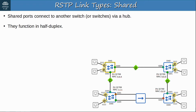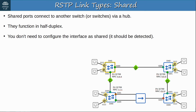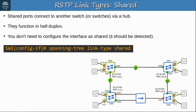Finally, shared ports connect to a hub. Due to the nature of hubs and the likelihood of collisions, these links must function in half-duplex. You don't need to configure the interface in shared mode — the switch will detect it — but to manually configure it, use 'spanning-tree link-type shared'. Although you should be aware of this link type, you will probably never see it in real networks since hubs have been fully replaced by switches. In the diagram, the connections to the hub are the shared links.